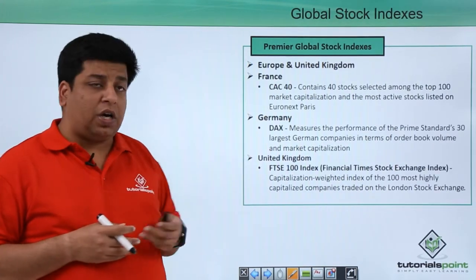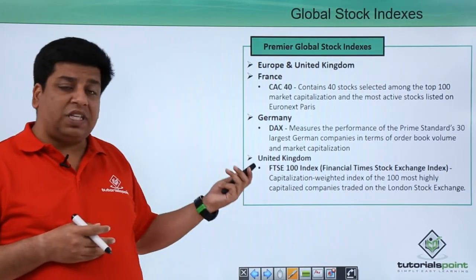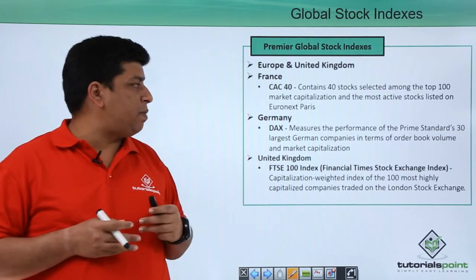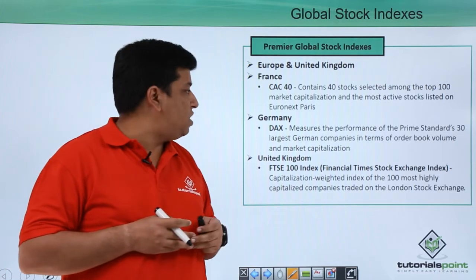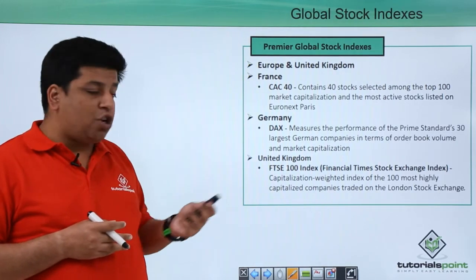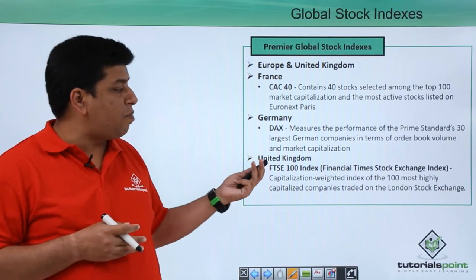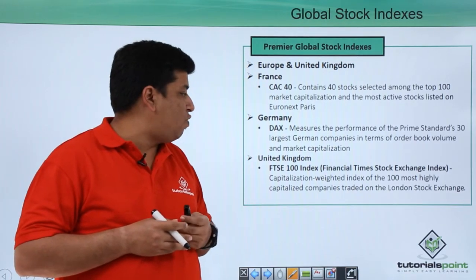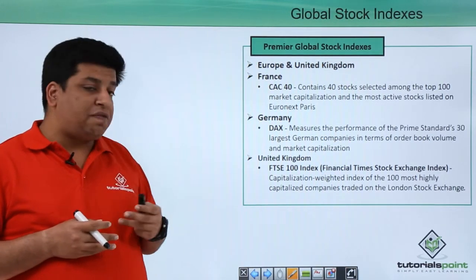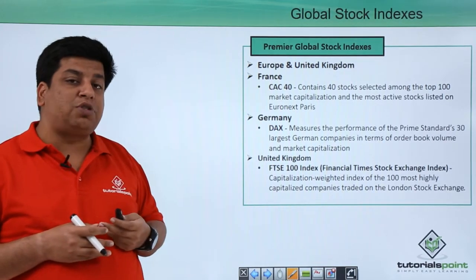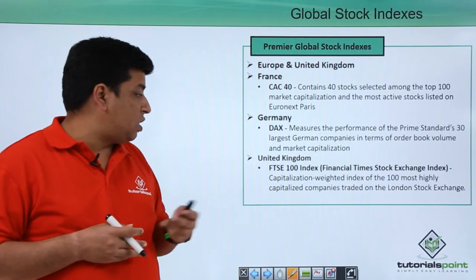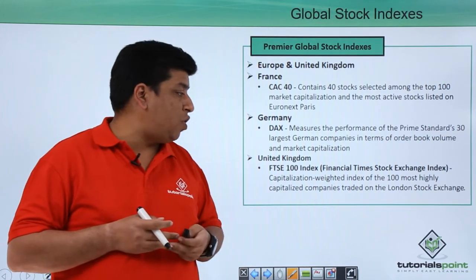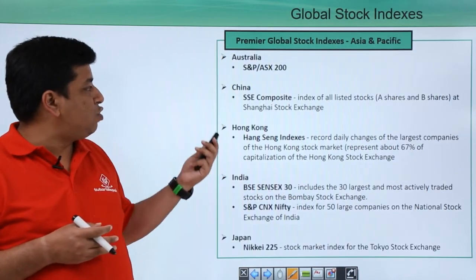In Europe, in France, something very popular is the CAC 40, which contains 40 stocks selected among the top 100 market capitalization and most active stocks listed on Euronext Paris. In Germany, you have the DAX, which measures the performance of the prime standard 30 largest German companies in terms of order book volume and market capitalization. The FTSE 100, or Financial Times Stock Exchange index, comprises the 100 most highly capitalized companies traded on the London Stock Exchange.